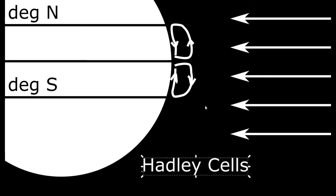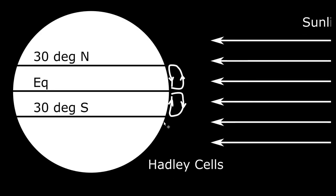I've just drawn a cross section of Hadley cells here. It's important to keep in mind that because the Earth is rotating, these Hadley cells go all the way around the globe. You can envision them in three dimensions like donuts — donuts that encircle the globe and are constantly rolling over themselves, churning up the atmosphere.